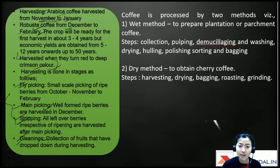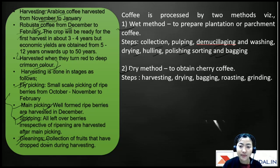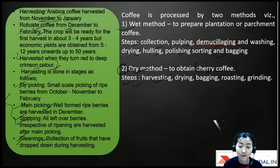Coffee can be processed by two methods: the wet method and the dry method. The wet method is used for preparation of parchment or plantation coffee — steps include collection, pulping, demucilaging, washing, drying, hulling, polishing, sorting, and bagging. The dry method obtains cherry coffee — steps are harvesting, drying, bagging, roasting, and grinding.